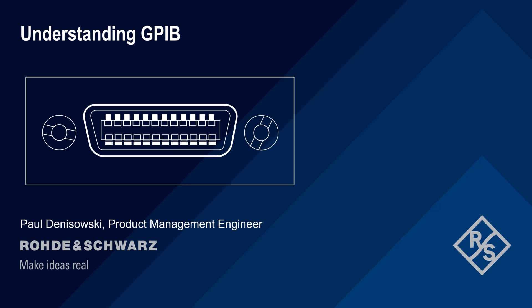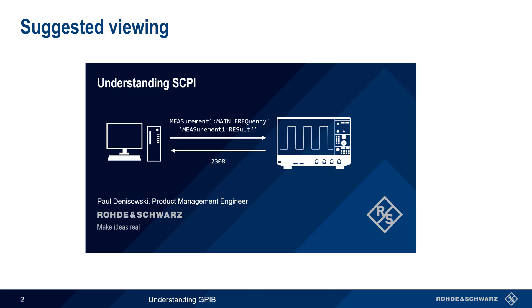Hello and welcome to this presentation Understanding GPIB. In this presentation we'll provide a short technical introduction to GPIB and explain how GPIB is used for automation of test and measurement instruments. Most modern test and measurement instruments are controlled using standardized SCPI commands sent over GPIB or other interfaces such as Ethernet or USB. We'll discuss SCPI only very briefly near the end of this presentation, so please see the separate presentation Understanding SCPI for a more detailed explanation.